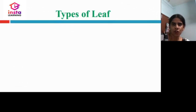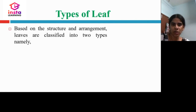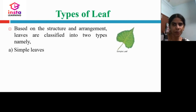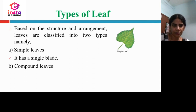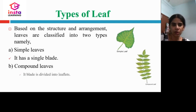The midrib, seen in the middle of the lamina, divides the leaf surface into two. Based on structure and arrangement, leaves are classified into two types: simple leaves, which have a single blade, and compound leaves, which have many leaflets.